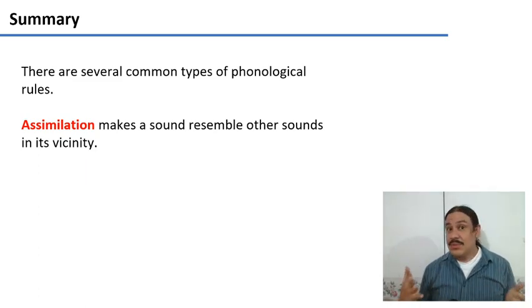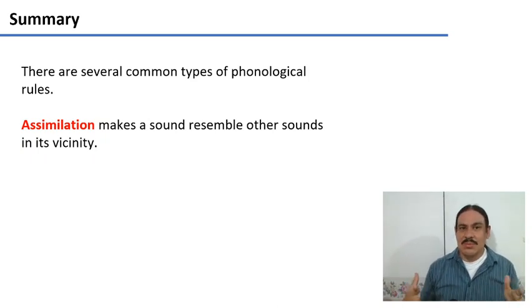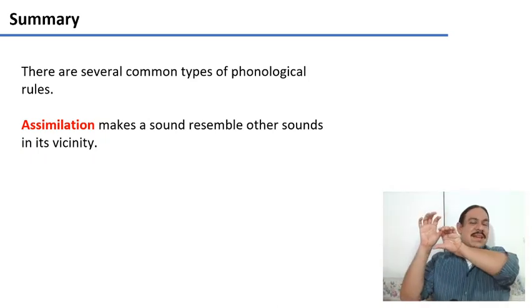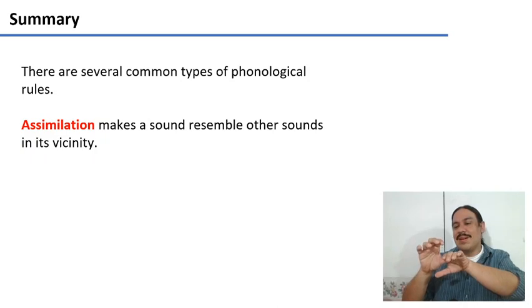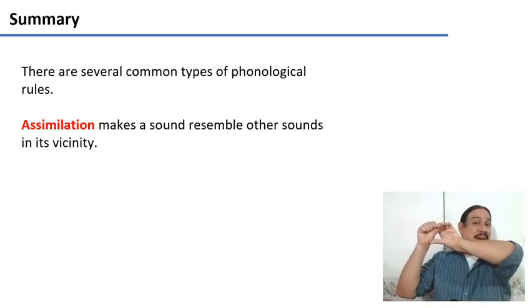So we have several common types of rules but assimilation is a very common one where one sound resembles the others more. For example, an n becomes velar when it is next to velar sounds.